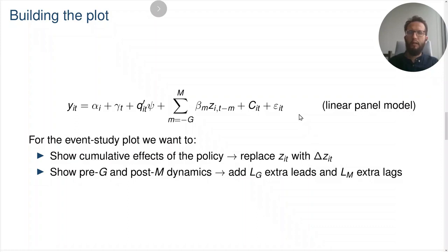So, how do we turn our Linear Panel Model into an estimating equation that we can use to build the event study plot? Since we want to show cumulative effects of the policy, we're going to replace the levels of the policy variable with first differences of the policy variable. So, this delta ZIT is going to be ZIT minus ZIT minus 1. And we're also going to include some extra dynamics in the equation. We want to be able to have some over-identifying restrictions in this estimating equation. Because we want to be able to test if the policy is having effects on the outcome before it was supposed to have effects or after the effects were supposed to die off.